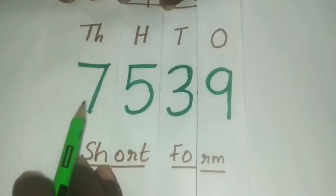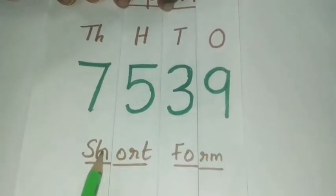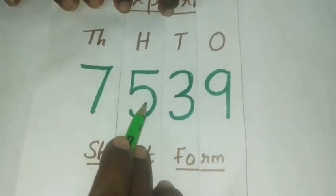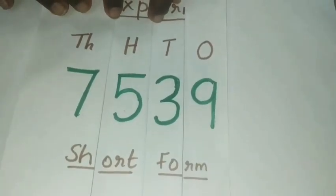So, when we write the face value of all the places, we got the short form. 7539. Have you understood, children?